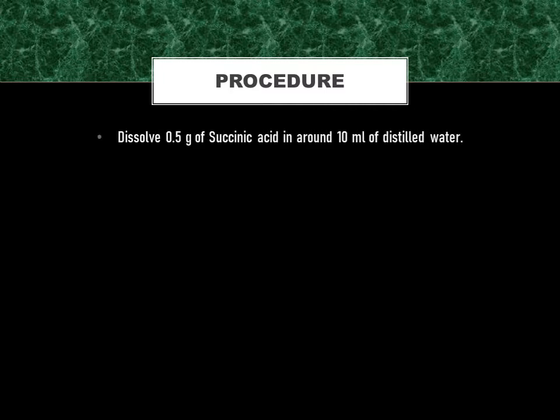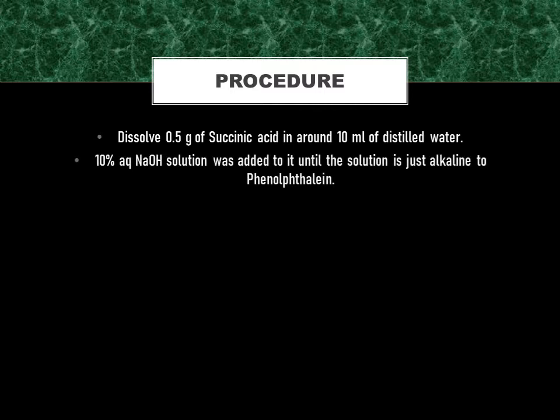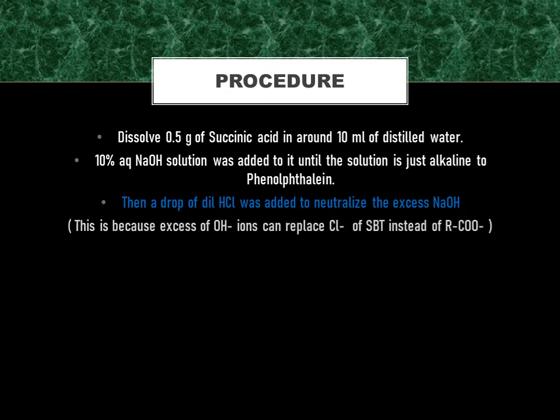This is the procedure we will be following. First, dissolve 0.5 gram of succinic acid in around 10 ml of distilled water. Second, 10% aqueous sodium hydroxide solution was added to it until the solution is just alkaline to phenolphthalein. Then, a drop of dilute HCl was added to neutralize the excess NaOH. Now the question arises: why is neutralization carried out after adding NaOH? This is because excess OH⁻ ions can replace Cl⁻ of SBT instead of the carboxylate ion.